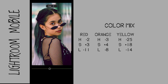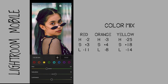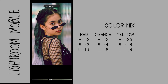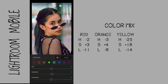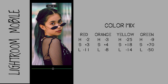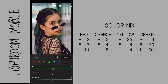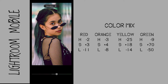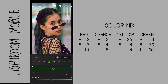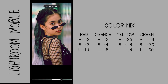Under yellow: hue to negative 25, saturation to plus 18, luminance to negative 14. Under green: hue to plus 9, saturation to plus 70, luminance to negative 50.